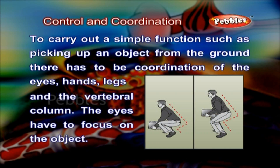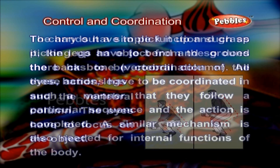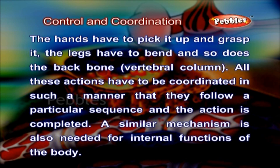To carry out a simple function such as picking up an object from the ground, there has to be coordination of the eyes, hands, legs and the vertebral column. The eyes have to focus on the object, the hands have to pick it up and grasp it, the legs have to bend and so does the backbone. All these actions have to be coordinated in such a manner that they follow a particular sequence and the action is completed.